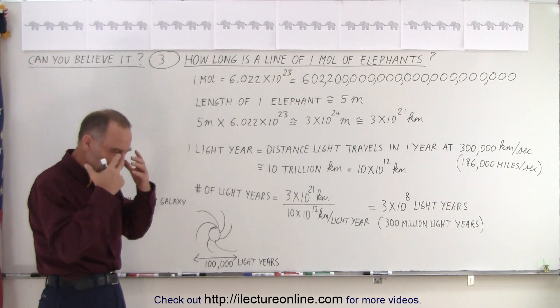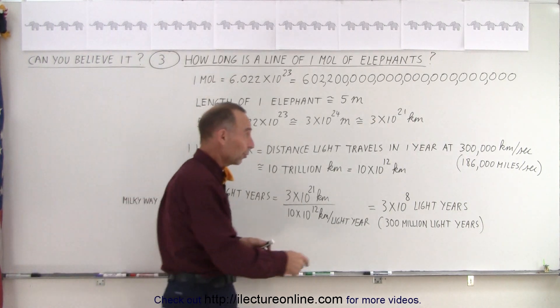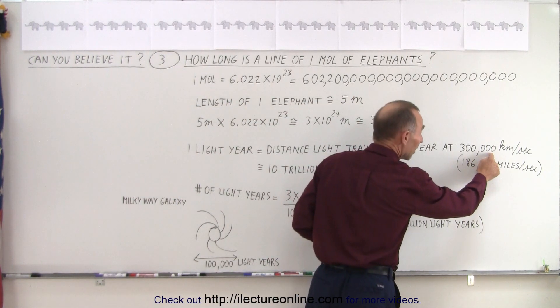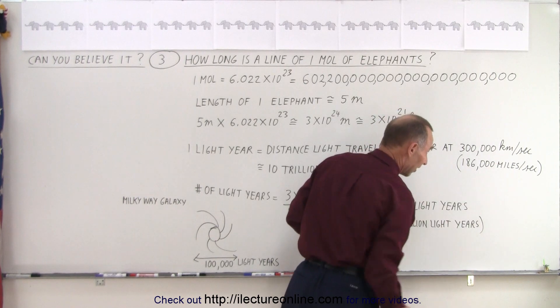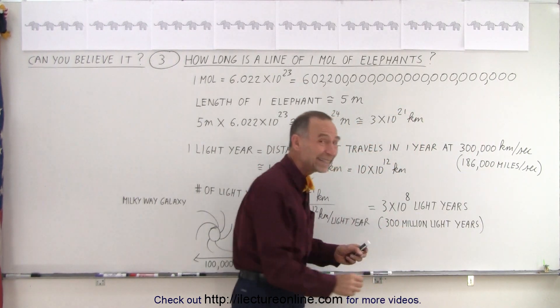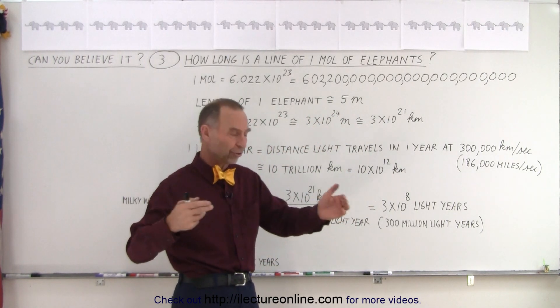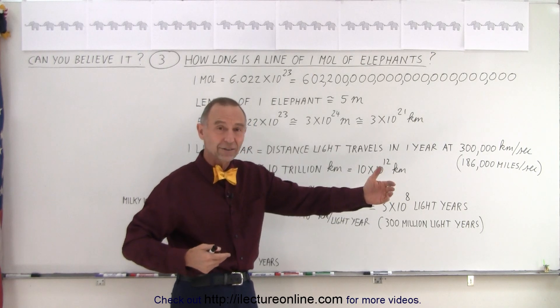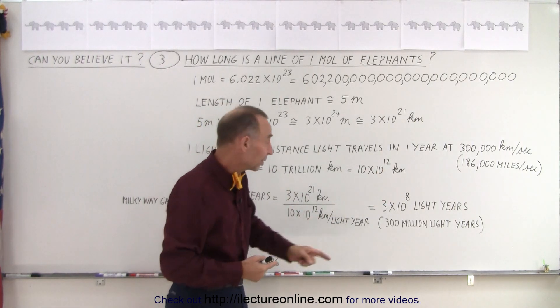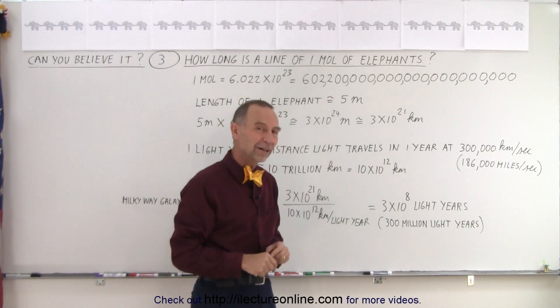How do you fathom 300 million light years? One way to look at it is light at this incredible speed of 300,000 kilometers per second would require 300 million years to travel that distance. Imagine being in a rocket that can travel from here to the moon in just over a second. At that speed, it would take you 300 million miles to travel the length of a mole of elephants.